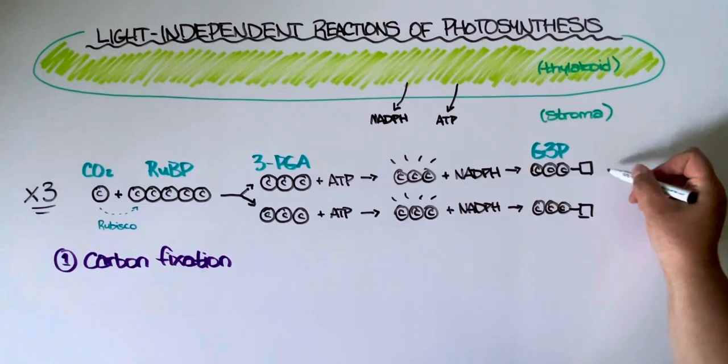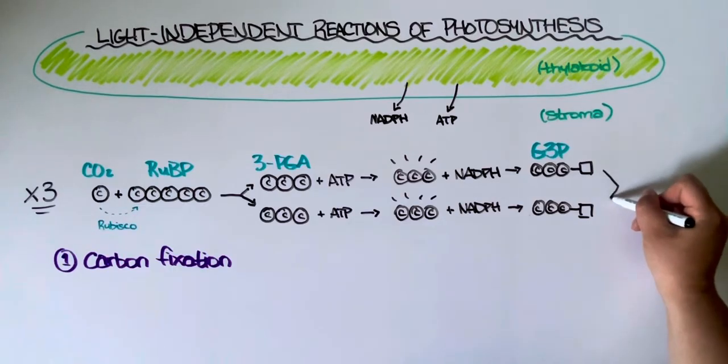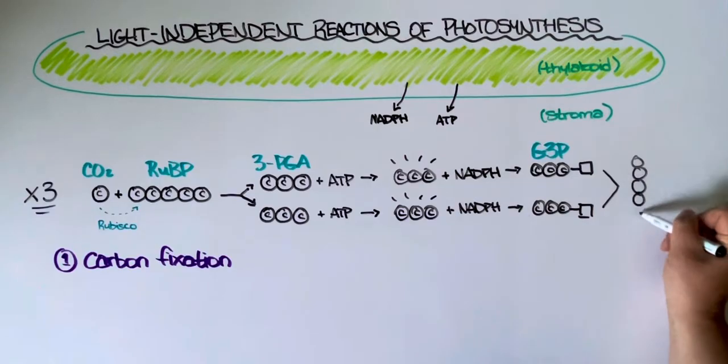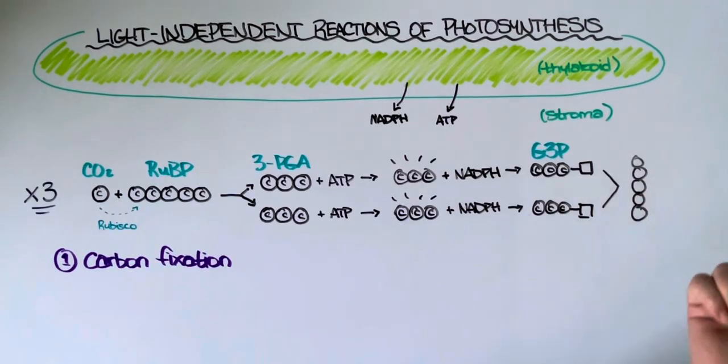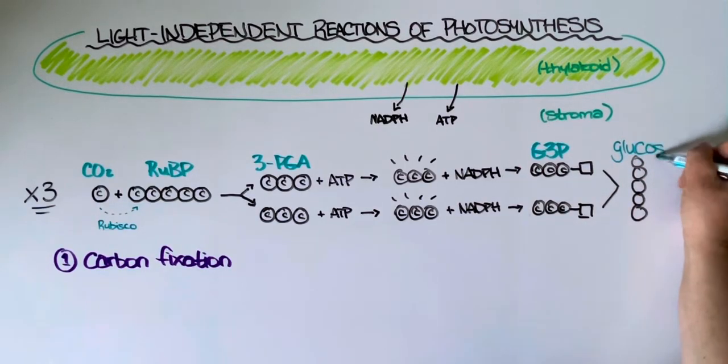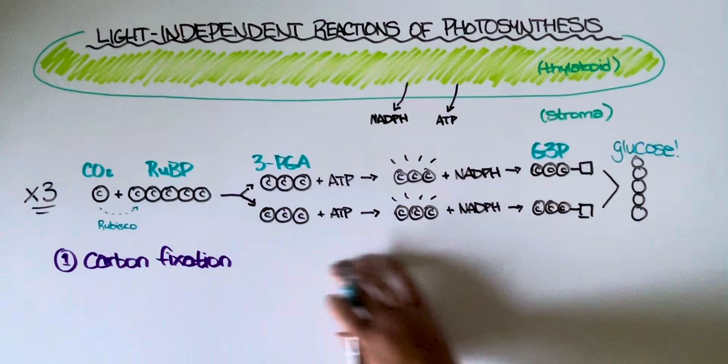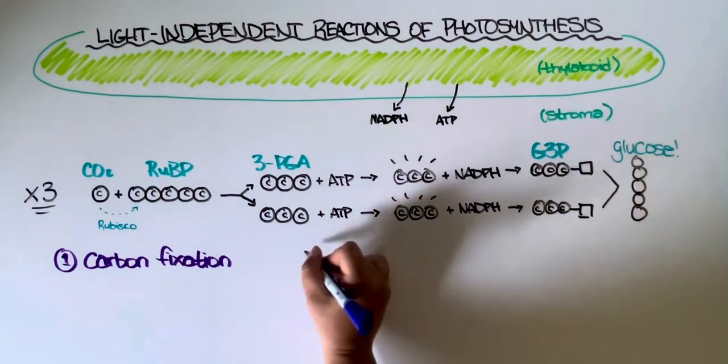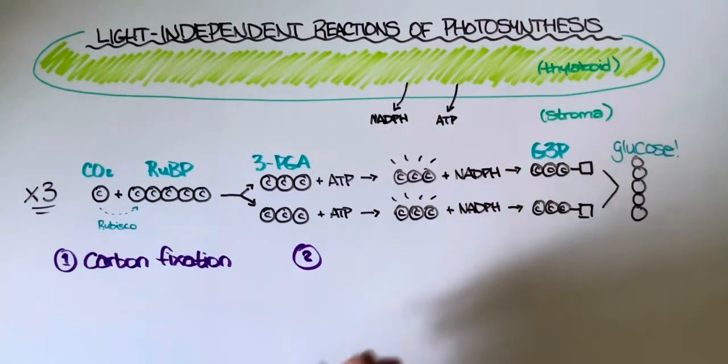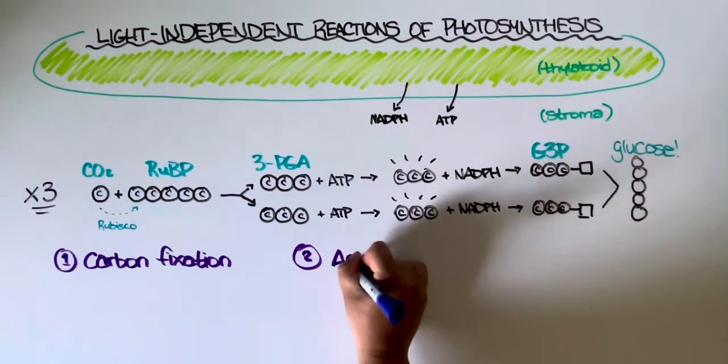If I take two of those G3P molecules and link them together, I get a six carbon compound which is glucose. So this is the second step of the light independent reactions. We call these reactions here activation and reduction.